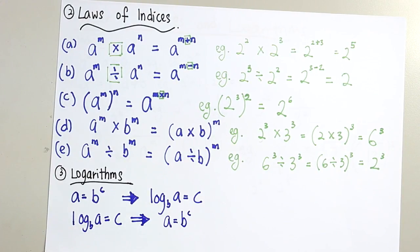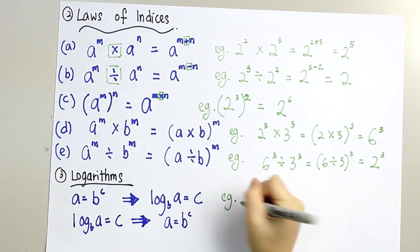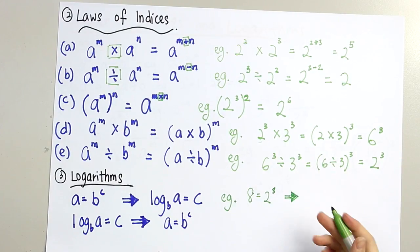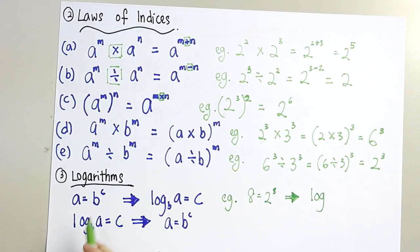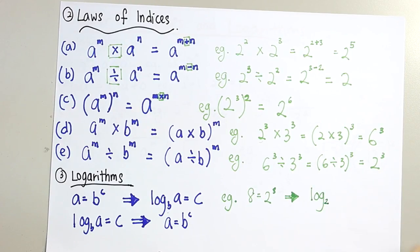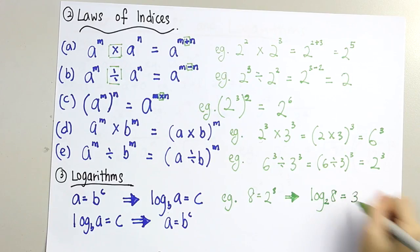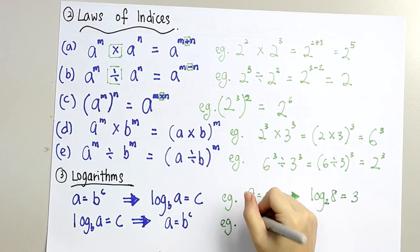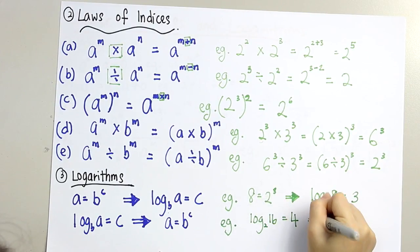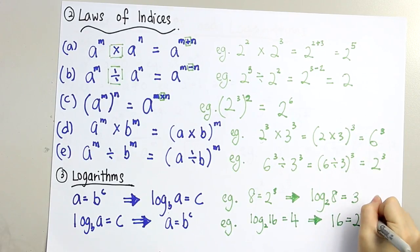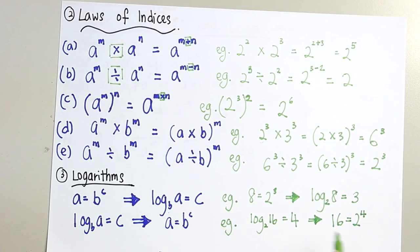For a few examples: 8 is equal to 2 to the power of 3, so we can change it into log form. 2 is the b, 8 is the a, and 3 is the c — so log base 2 of 8 equals 3. Another example: when log base 2 of 16 is equal to 4, therefore 16 is equal to 2 to the power of 4. Here 16 is a, 2 is b, and 4 is c. So 2 to the power of 4 is equal to 16.